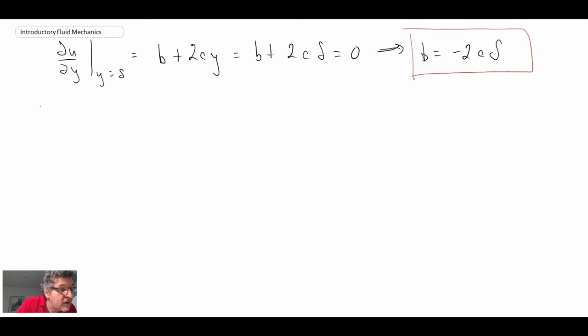He also looked at what was happening at the wall. Here, the velocity was equal to 0 along the wall. Looking at our velocity profile, that would be equal to a, and so that then told him that a is equal to 0. That's one of the constants specified.